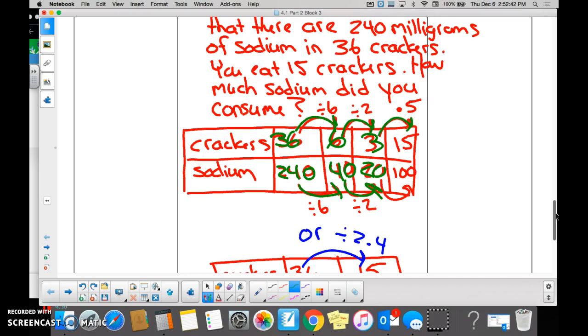Can she get from three to 15? Yes. Pretty easy now, right? Yeah. So if she multiplied the three crackers by five, she must multiply the sodium by? Five. By five. Here is your answer.